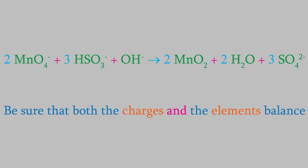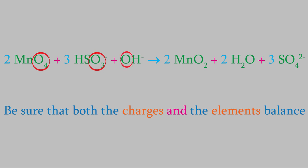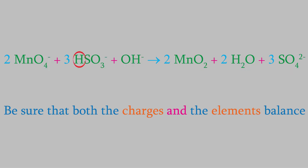Now we'll check the elements. There are two manganese atoms on the left and two on the right. Next, let's check the oxygen. There are eight oxygens from the permanganates, nine from the bisulfite ions, and one for the hydroxide, for a total of eighteen. On the right side, there are four oxygens from the manganese oxide, twelve from the sulfate ions, and two from the water molecules, for a total of eighteen. There are three hydrogens in the bisulfite ions and one in the hydroxide, for a total of four, and also four hydrogens from the water molecules on the right side. Finally, there are three sulfur atoms on the left and also three on the right. So all of the elements in our reaction balance out.